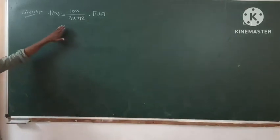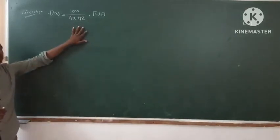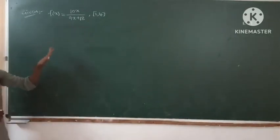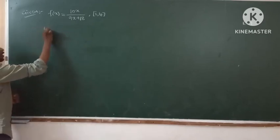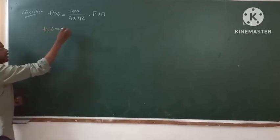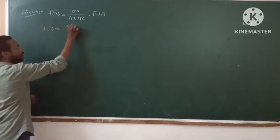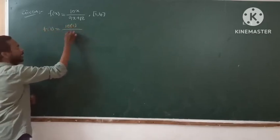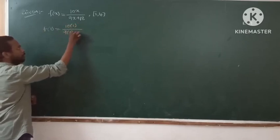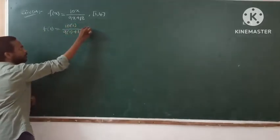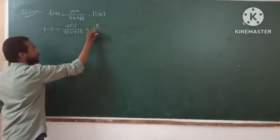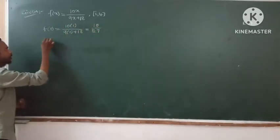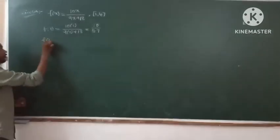We can use either Rolle's theorem or Lagrange's mean value theorem by finding f(1) and f(4) values first. So, f(1) — substituting x = 1 into 10(1) / (9(1) + 20) — gives us 10/27. That is f(1). Now find f(4).